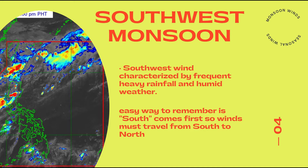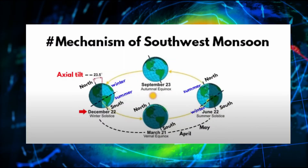Southwest monsoon — ang southwest monsoon ay kinakaracterize ng malakas na pagbagsak ng ulan at mayroong humid na weather. Isa sa mga paraan para matandaan natin ang concept ng southwest monsoon ay ang word na 'south'. Sa ating nakaraang lessons, pag-aralan natin kung paano magbasa ng wind direction. In this case, galing yung wind sa south papuntang north. The southwest monsoon usually occurs between the months of June to October.